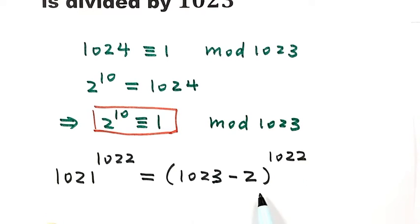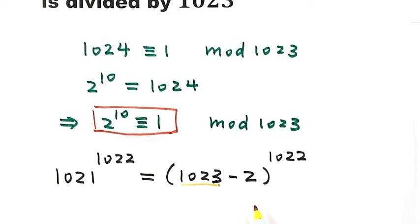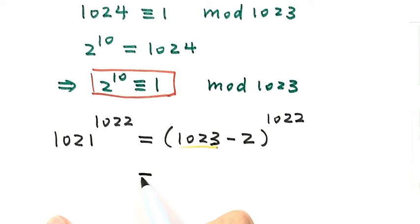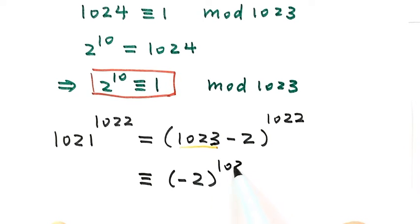For this expression, we can use a binomial expansion. When you use a binomial expansion, every term has a factor of 1023 except the very last term. So when the expansion is divided by 1023, the remainder only depends on the very last term, which is negative 2 to the power of 1022.